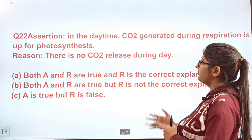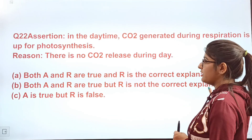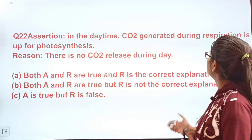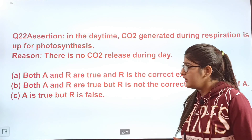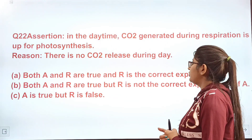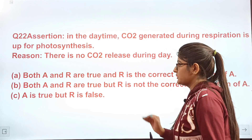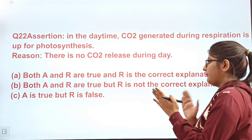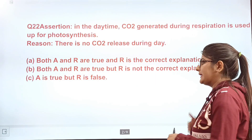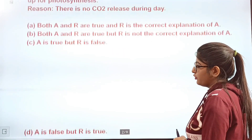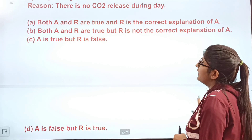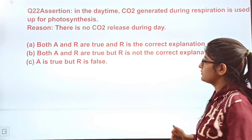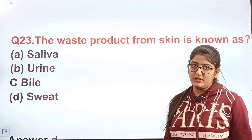Question 22: Assertion — in the daytime, CO2 generated during respiration is used up for photosynthesis. Reason — there is no CO2 released during the day. Options: A — both A and R are true and R is the correct explanation of A; B — both true but R is not the correct explanation; C — A is true but R is false; D — A is false but R is true. Read the assertion and reason and tell the correct answer in the comments; check from the description box.